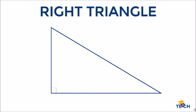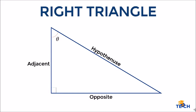As you can see, this is a right triangle. We have three sides: the hypotenuse, the adjacent, and the opposite. The hypotenuse is always the side that is opposite to the right angle, while the adjacent side is always the side near or beside the angle of interest.